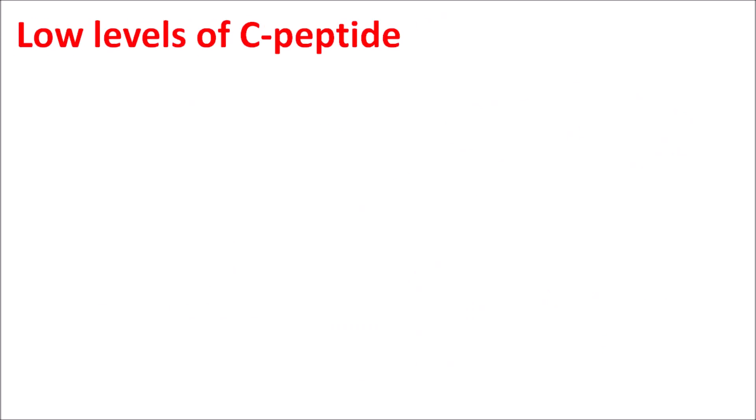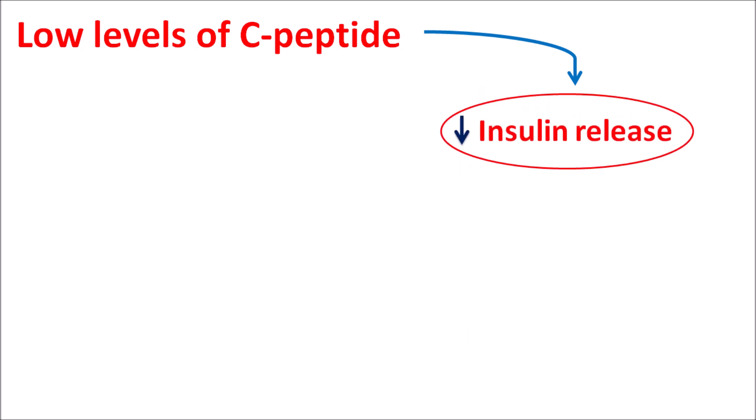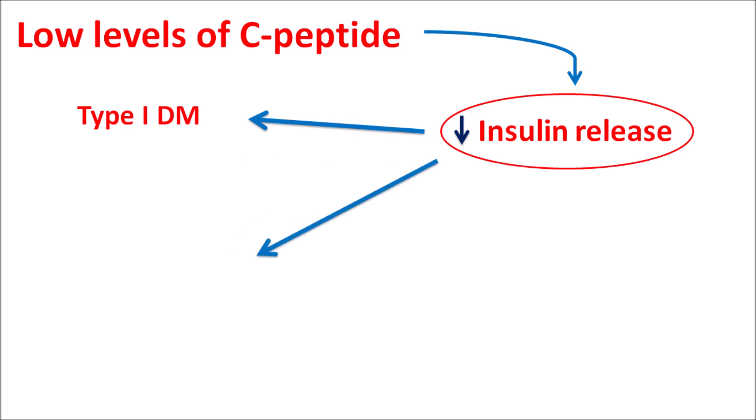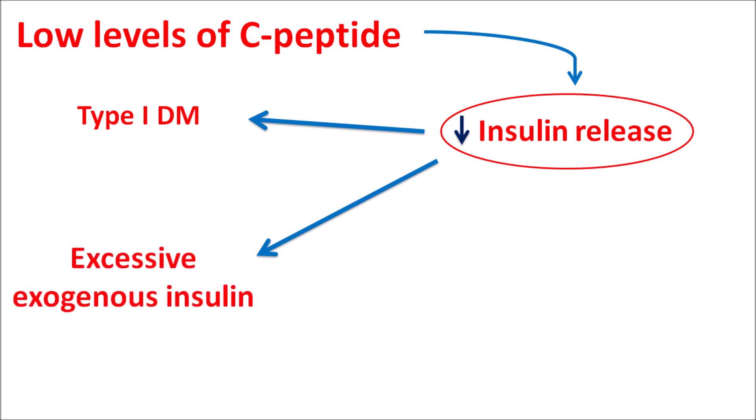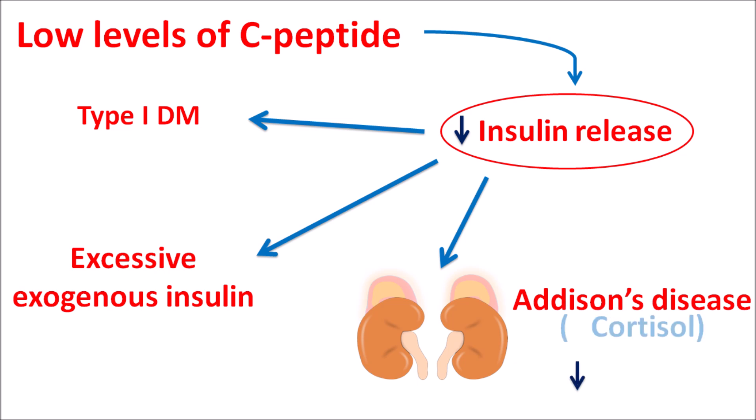Low levels of C-peptide indicate decreased synthesis of insulin. This is particularly observed in patients with type 1 diabetes mellitus, where there is destruction of beta cells resulting in decreased insulin release. It also occurs in patients administered excessive exogenous insulin, where repeatedly given external insulin reduces endogenous insulin release via negative feedback mechanisms, resulting in decreased C-peptide levels. Finally, in patients with Addison's disease, decreased cortisol levels reduce insulin synthesis, leading to decreased C-peptide levels.